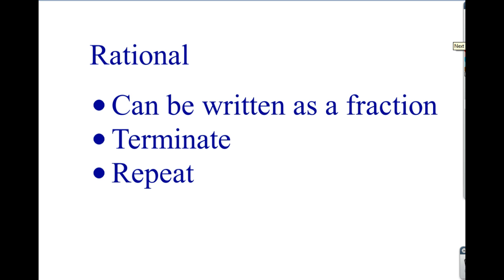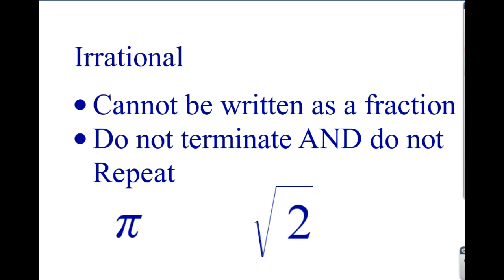Let's talk about what rational numbers are. Rational numbers can be written as a fraction. If it's a decimal, it's a terminating decimal, and if it's not a terminating decimal, it has repeats — it has a pattern. We sort of took this into some real-life situations. We talked about rational numbers being sort of sane, predictable. They follow patterns; they follow the rules. Those are rational numbers.